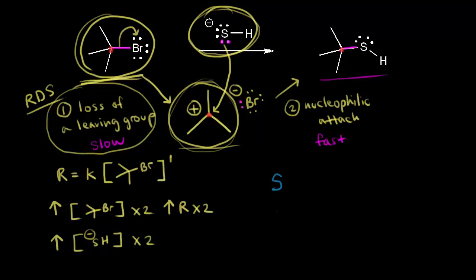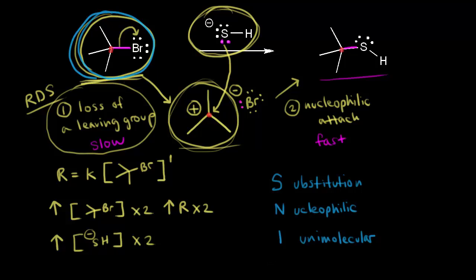We call this an SN1 reaction. The S stands for substitution, the N stands for nucleophilic, and the 1 refers to the fact that this is a unimolecular reaction — meaning the rate depends on the concentration of only one thing, our substrate (our alkyl halide). It's first order with respect to the alkyl halide, and nucleophilic substitution means our nucleophile has substituted for our leaving group in the product.